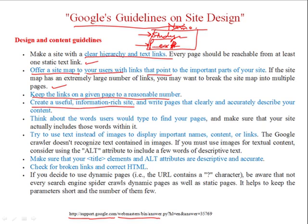Create a useful, information-rich site and write pages that clearly and accurately describe your content. You can use keyword-rich information or strategies to write text in a keyword-rich manner without compromising the readability of the text. Think about the words users would type to find your pages. For example, if your page is related to furniture or handicraft works, then your page titles and wording used in the page should focus on those things.